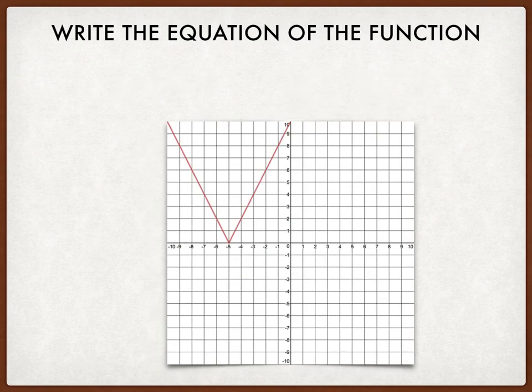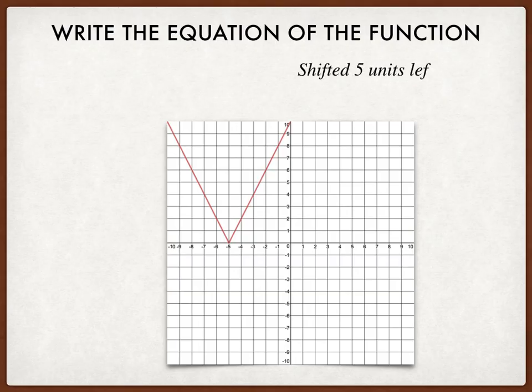And we'll do one last example together. What's the story with this graph? Well, there is a horizontal shift that has taken place, 5 units to the left. And this one is not the same steepness, right? The slope is, instead of 1 and negative 1, the slope is 2 and negative 2. So it's 2 times as steep.